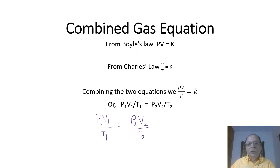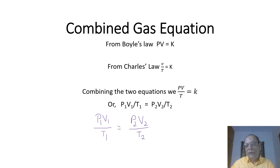Combined gas law or combined gas equation: from Boyle's law we have PV = K, and from Charles' law we have V/T = K. Combining the two equations, we have PV/T = K. So P1V1/T1 = P2V2/T2.